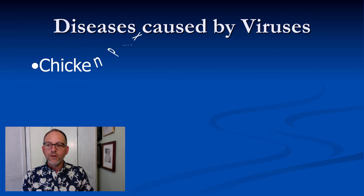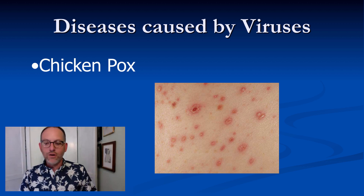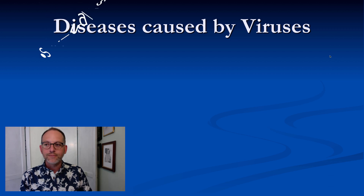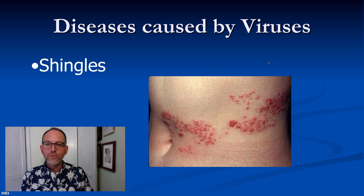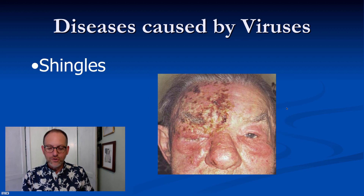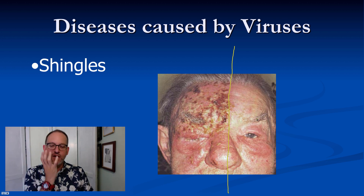Diseases caused by viruses: chicken pox — we now have a vaccine for it. Shingles is something older people get because the chicken pox virus never really goes away; it hides in your body and then shows up later causing a horrible painful rash. Shingles tends to only affect half of your body, and if it gets into your eye it can cause problems including blindness.